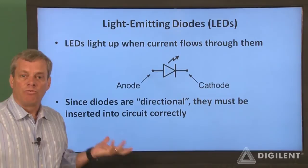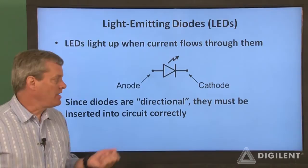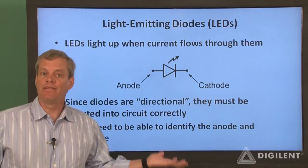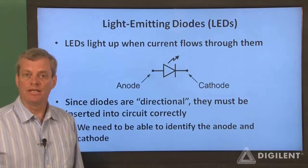Since diodes operate according to built-in directionality, the technical term is that they are polarized devices, we need to insert them in our circuit correctly. Therefore, we need to be able to identify the cathode and the anode on our physical diodes. Let's take a look at some of the diodes in Digilent's analog parts kit and see how to do that.